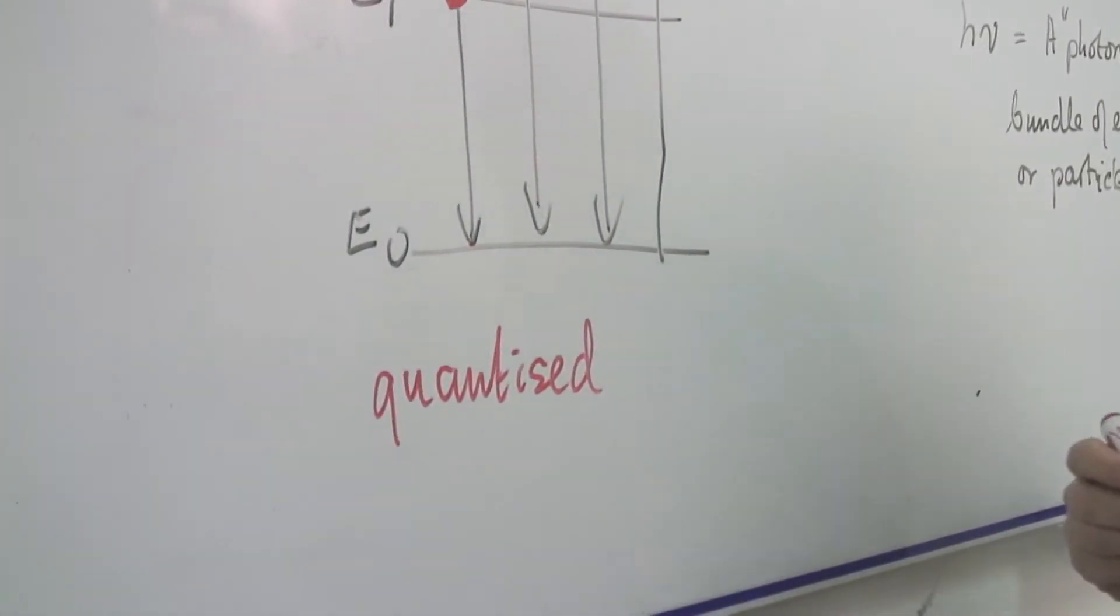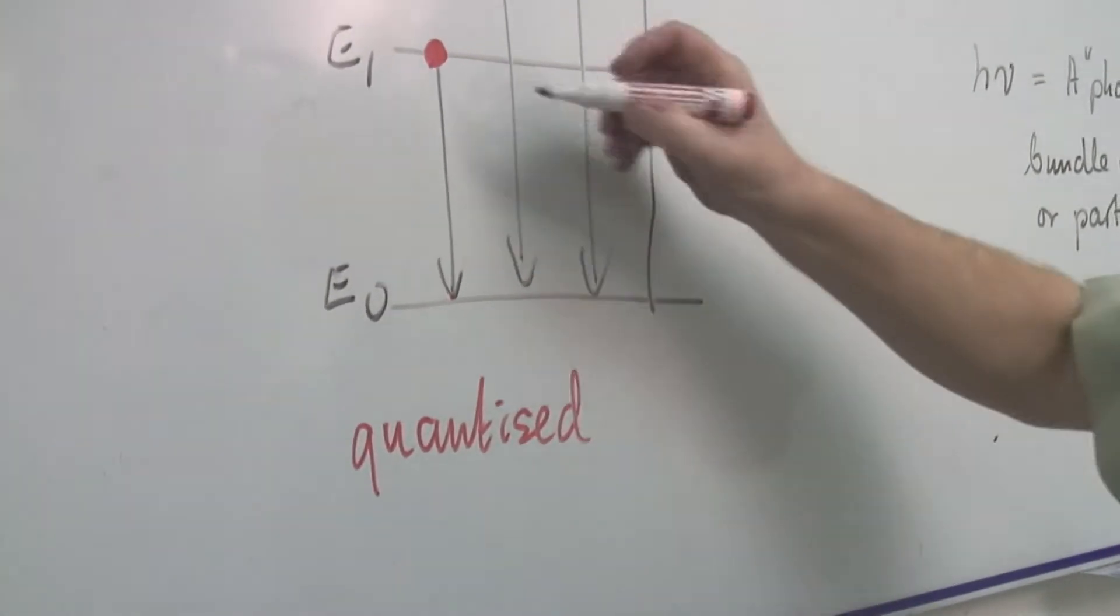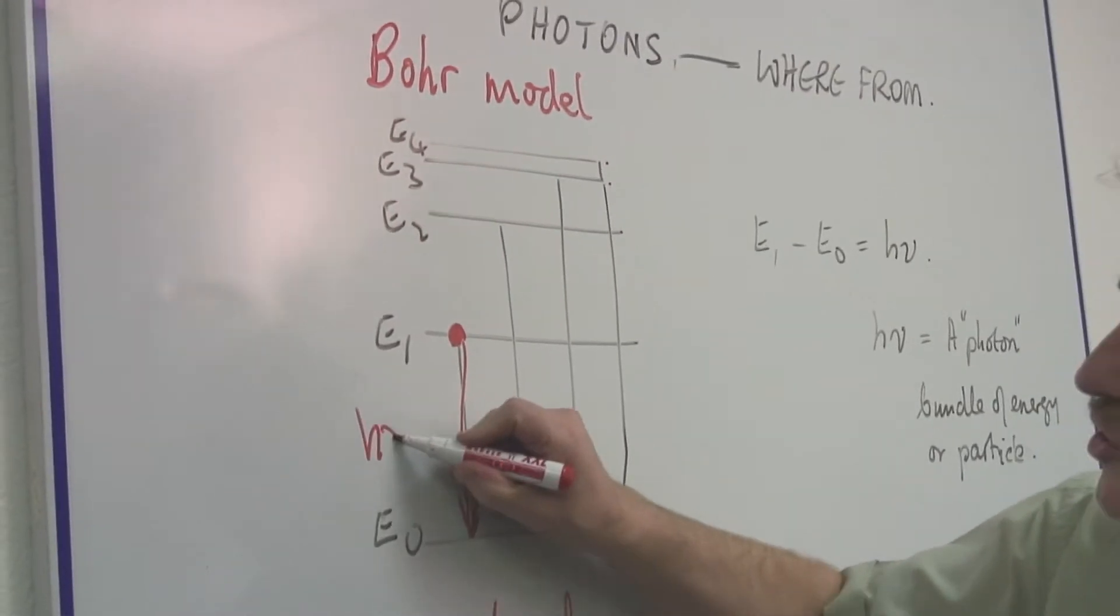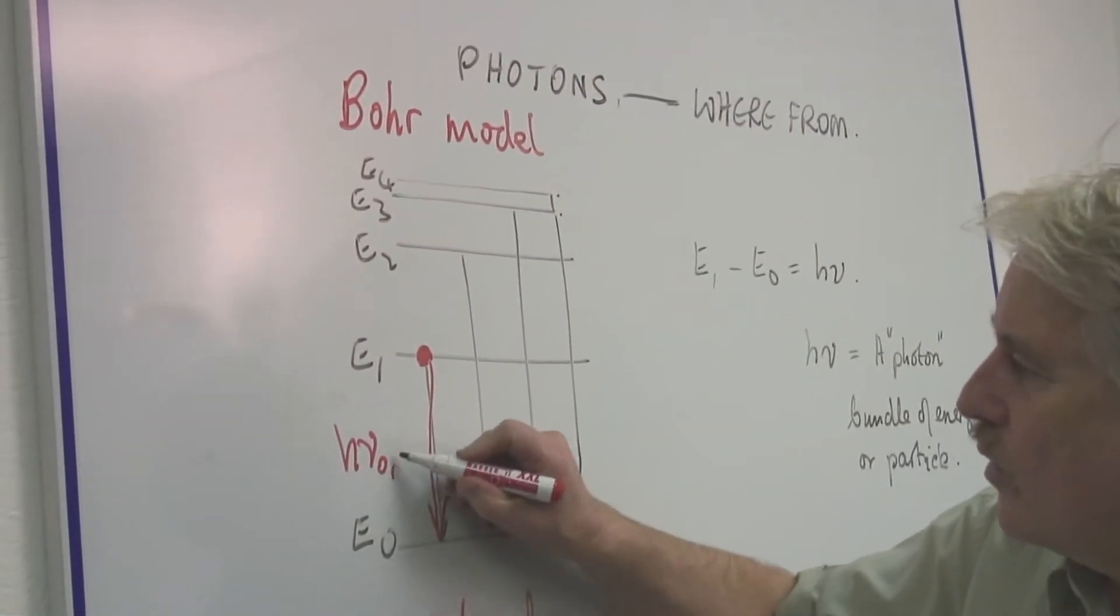So if they are quantized, they fall from one energy level to another and they emit H nu zero one, we'll call it.